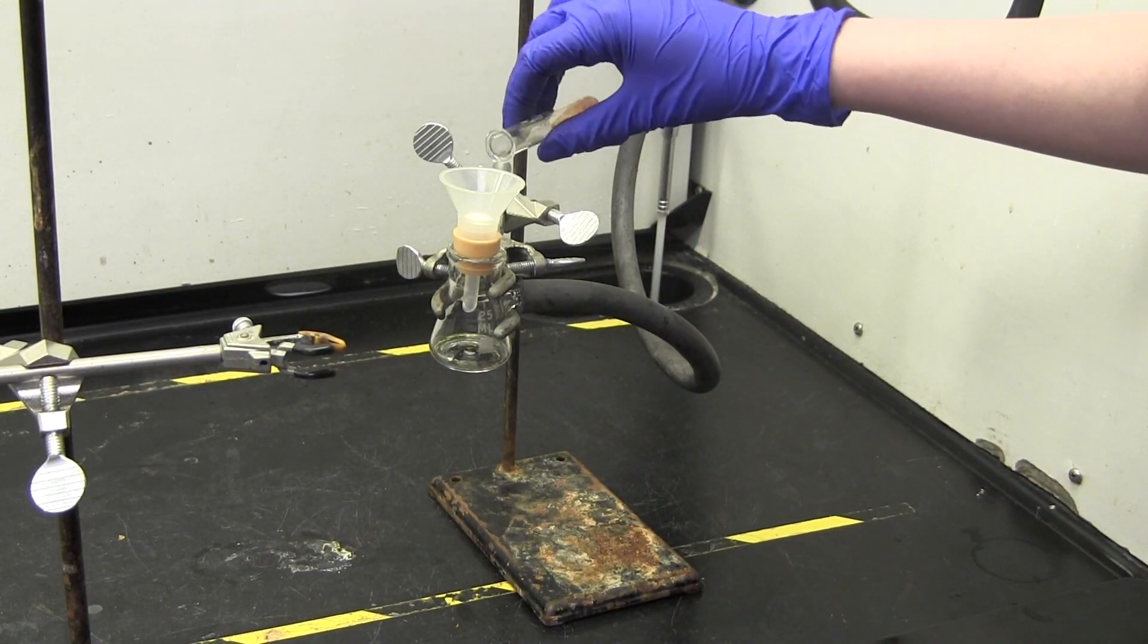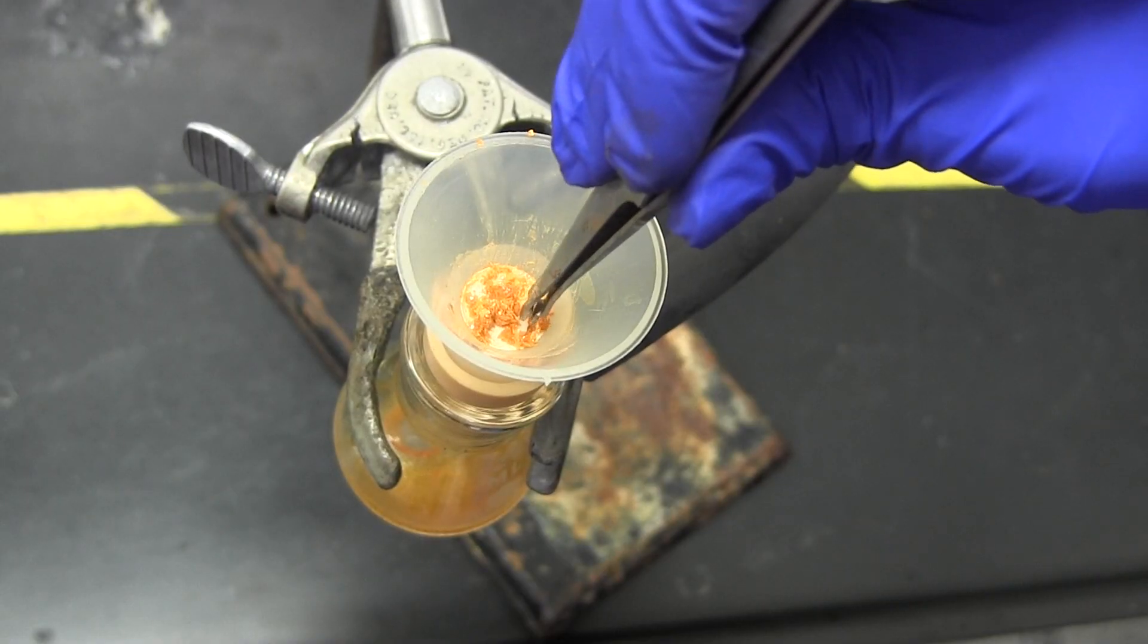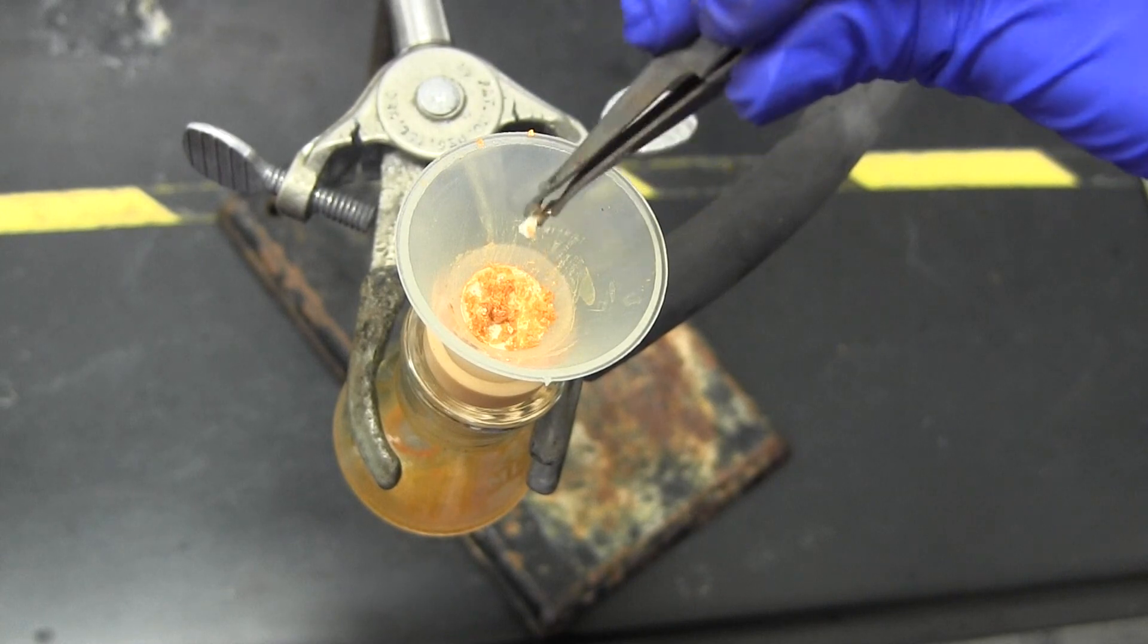Once the mixture has cooled, run it through the filter and use forceps to remove the boiling chip from the solid filtrate.